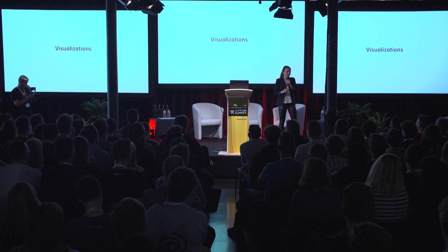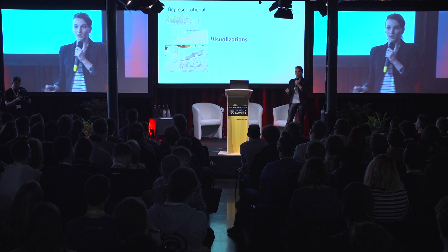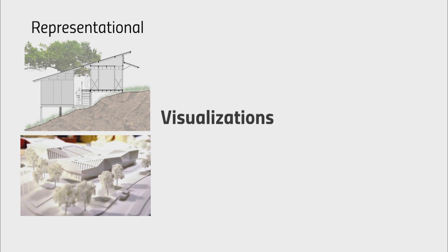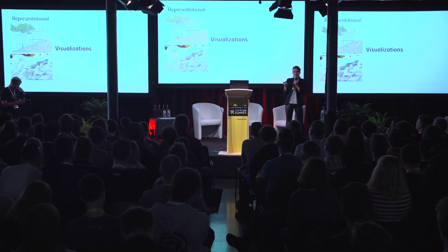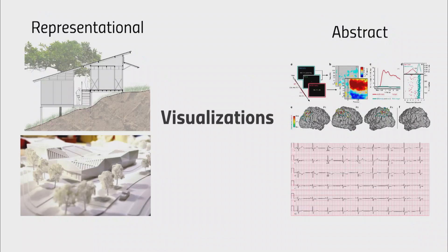We need to distinguish visualizations from visual images. Visual images are aesthetic forms of art — it's about beautification. But visualizations are here to inquire, to help people understand information and decide in a better way. On one hand, we have representational visualizations, like an architectural blueprint — everybody immediately understands it without prior knowledge. On the other hand, we have abstract visualizations, like brain imagery or ECG graphs — not obvious, requiring prior training to interpret, though being able to read them might be literally life-saving.